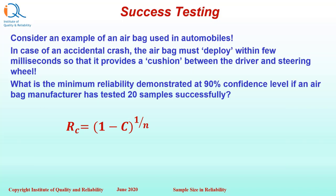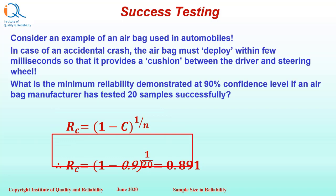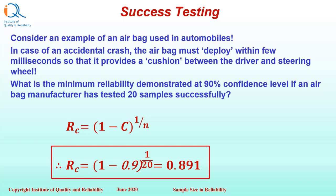Our formula is Rc equals 1 minus confidence level C raised to the power 1 upon n. Here n is 20 and confidence level is 90% or 0.9. So we write: 1 minus 0.9 raised to the power 1/20, which equals 0.891.